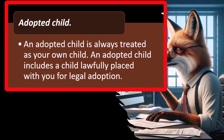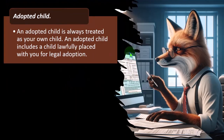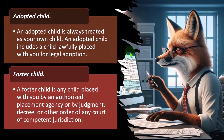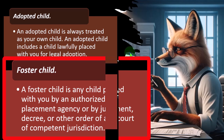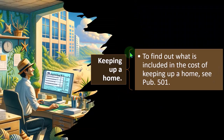An adopted child is always treated as your own child, and an adopted child includes a child lawfully placed with you for legal adoption. A foster child is any child placed with you by an authorized placement agency or by judgment, decree, or other order of any court of competent jurisdiction.